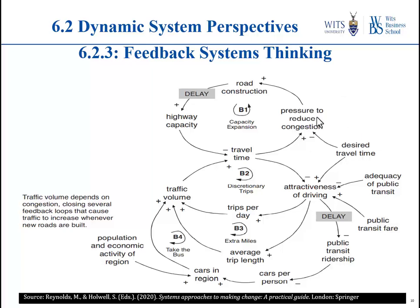This final slide shows an expanded version of the same traffic problem, recognizing that there are many other factors involved. There are multiple feedback loops — classified as B1, B2, B3, B4, and so on — showing balancing and reinforcing loops. This expanded figure captures in a comprehensive format the complex interrelationships in the traffic congestion problematical situation.